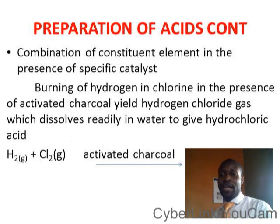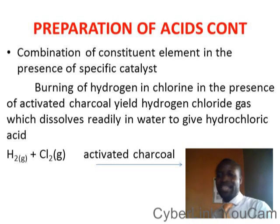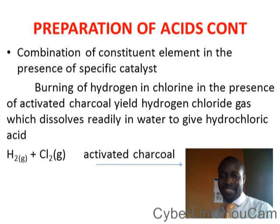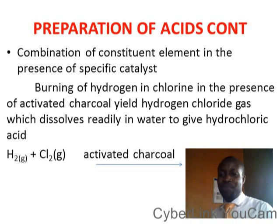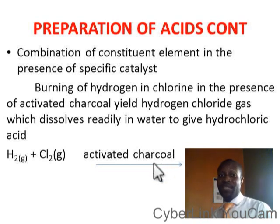Another method is preparation by combination of constituent elements in the presence of specific catalysts. If you want to prepare hydrochloric acid, all you need is hydrogen and chlorine in the presence of activated charcoal. When they spark together, they give you hydrochloric acid — that is direct combination. Activated charcoal is the catalyst used in the direct combination process of preparing acid.